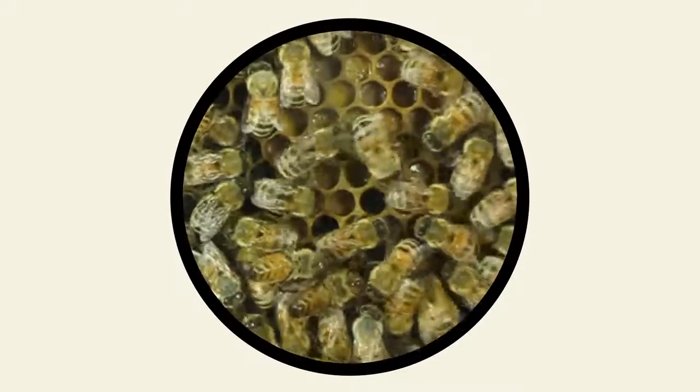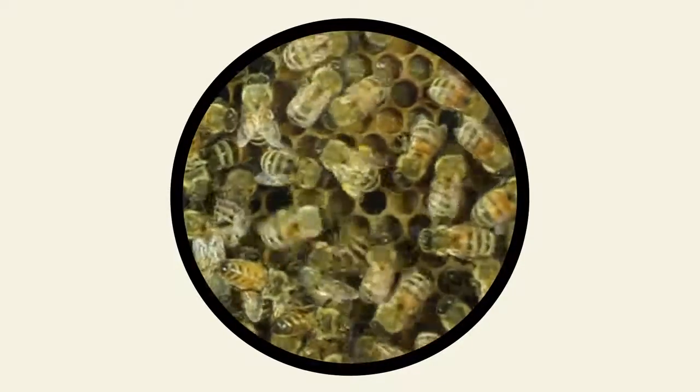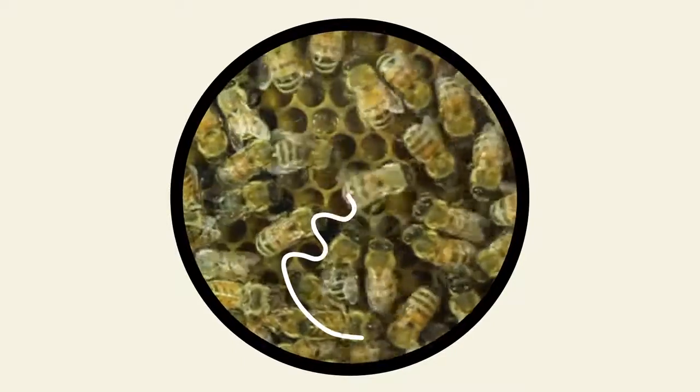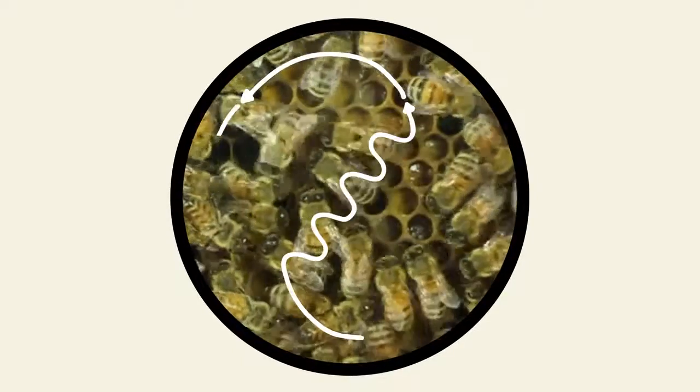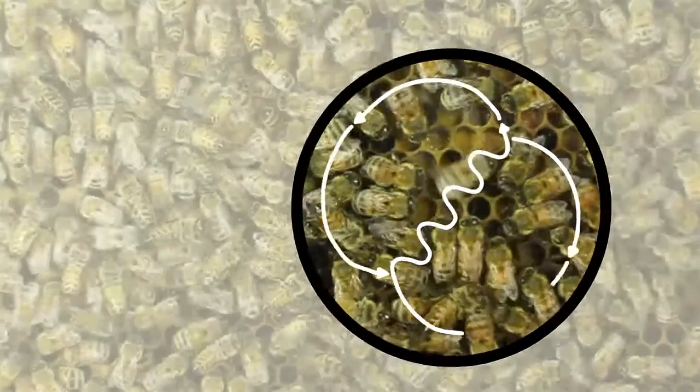Before von Frisch, other scientists had observed that returning bees tended to waggle about excitedly in a figure eight pattern before sharing the collected pollen and nectar with their hive mates.